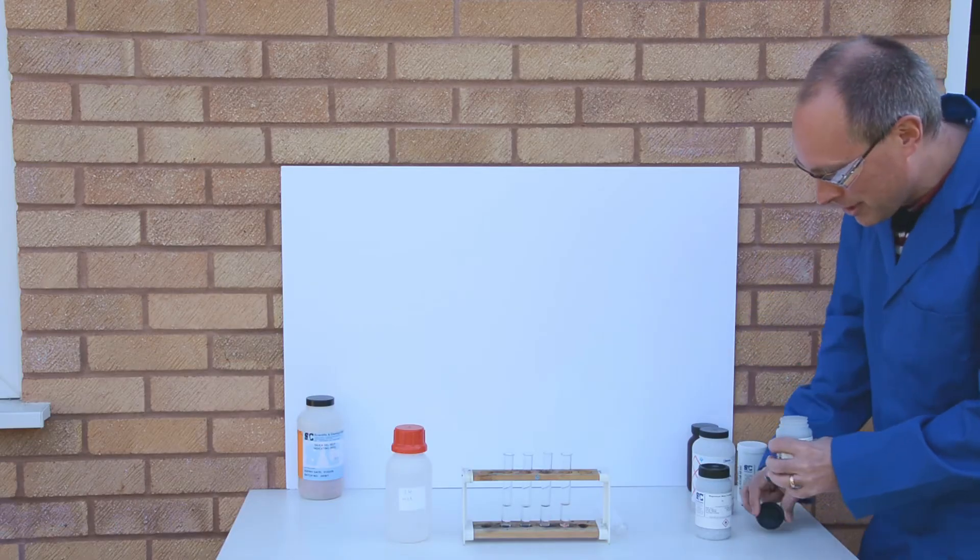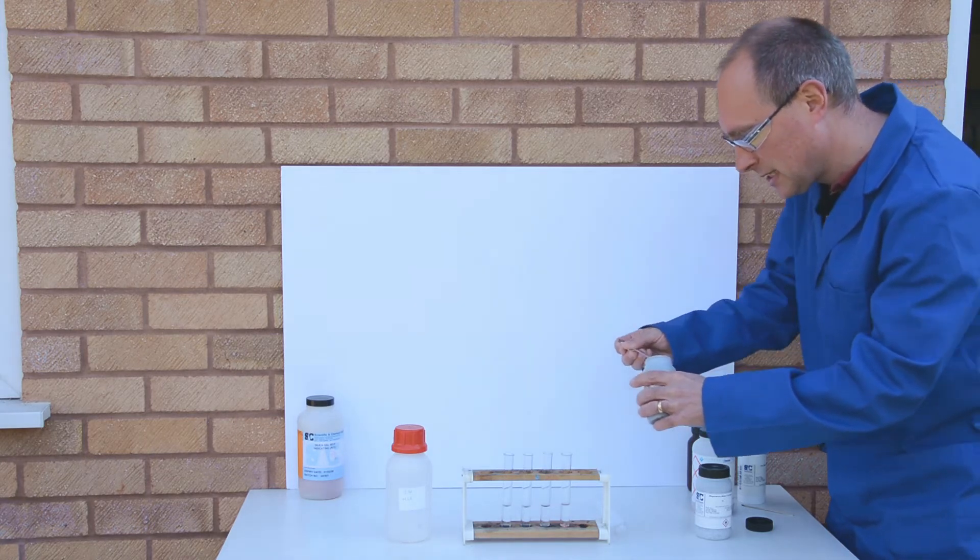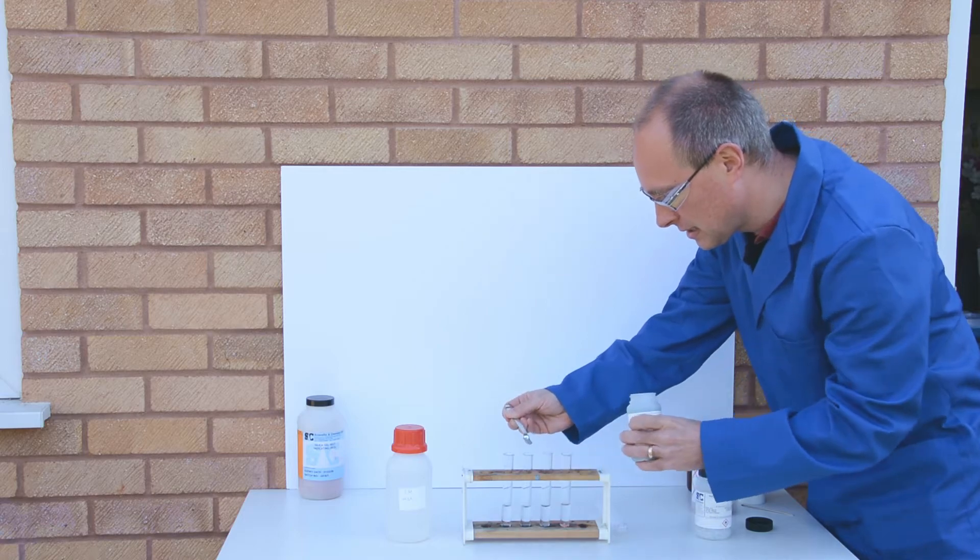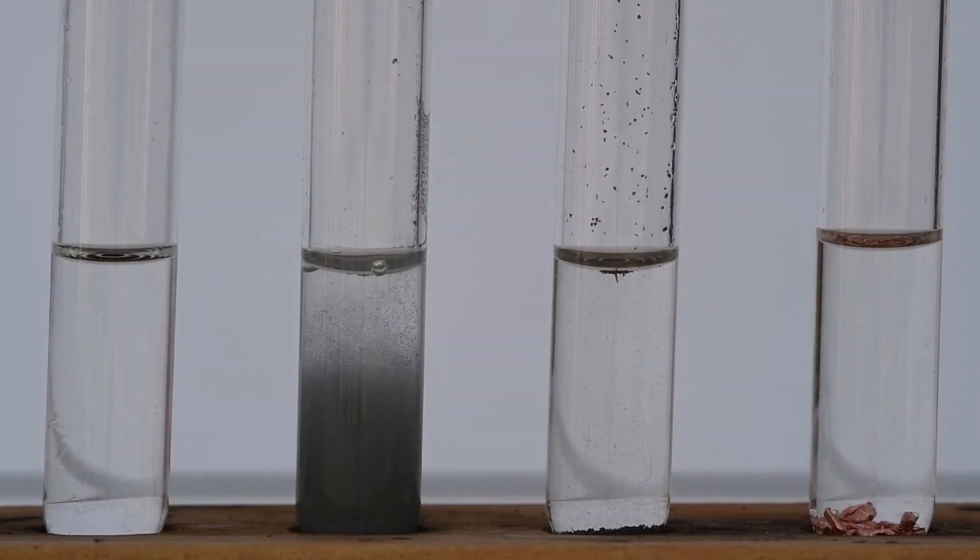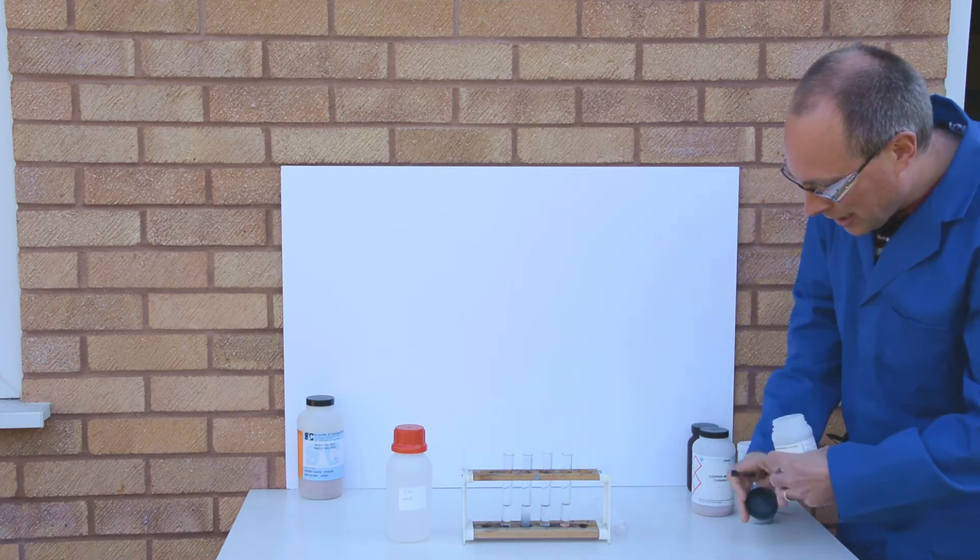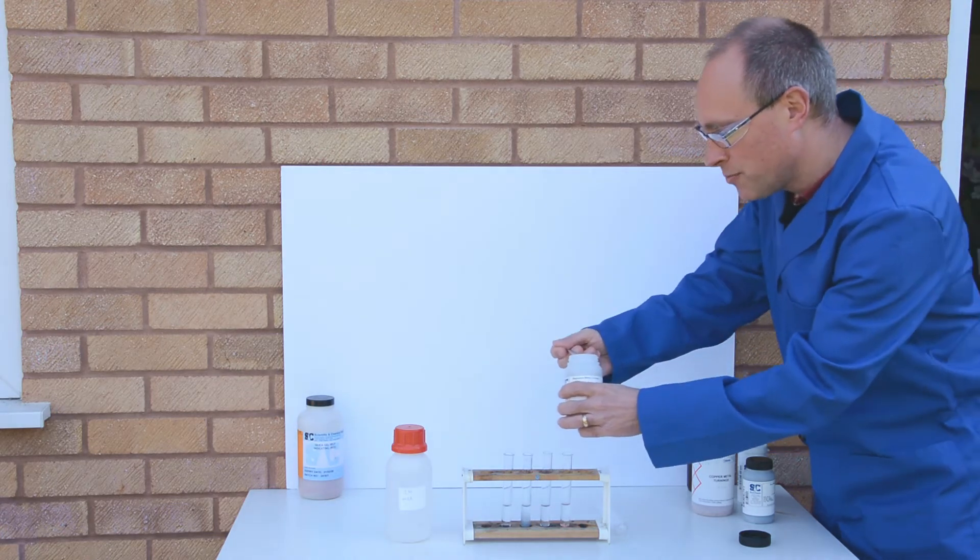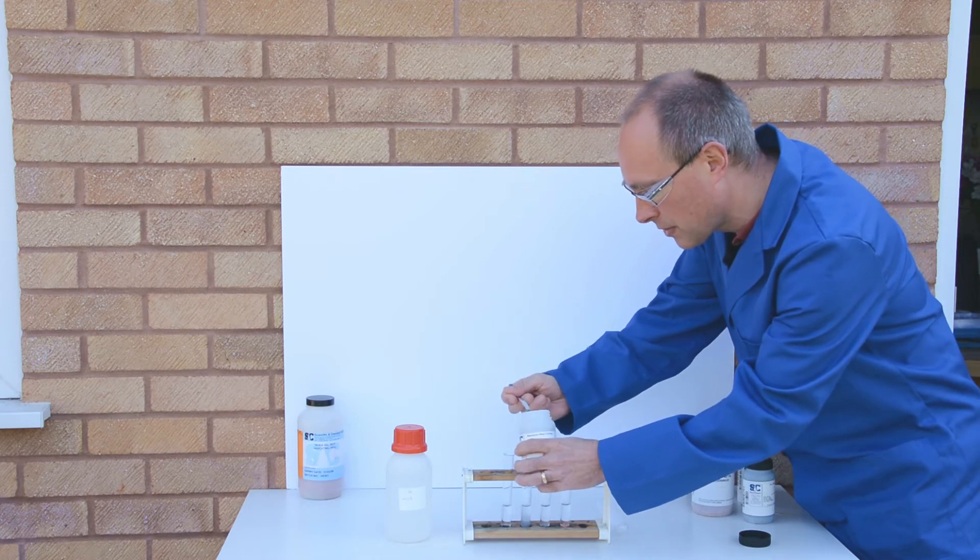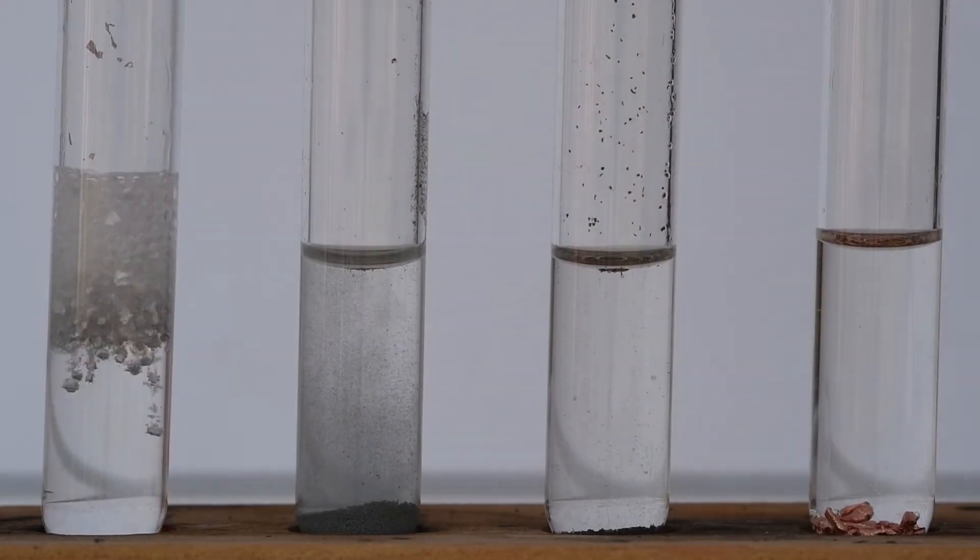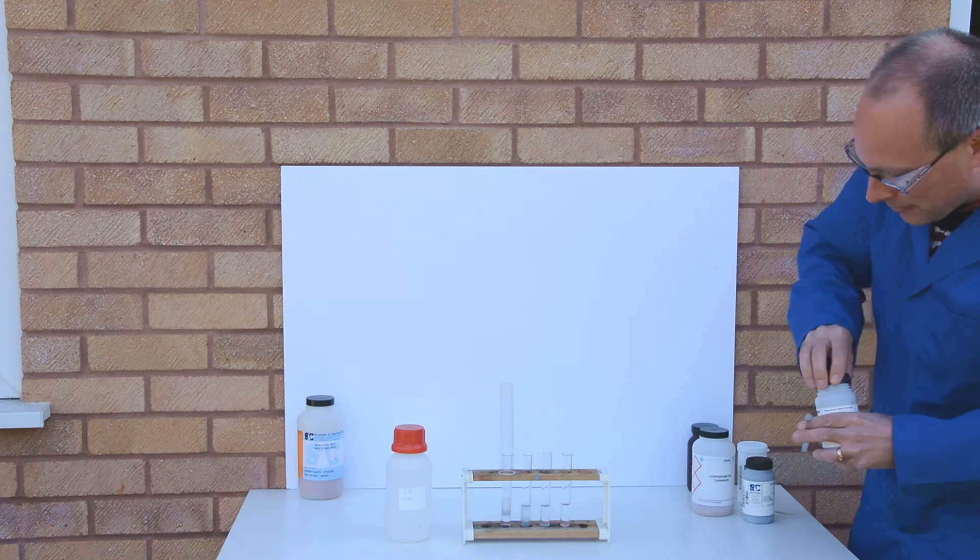In the next test tube I'm going to put a small amount of zinc. Then magnesium - magnesium not as powder but as magnesium turnings. I'm also just going to pop a boiling tube over the top of that to trap the gas that's produced.